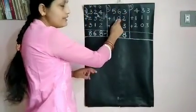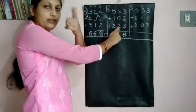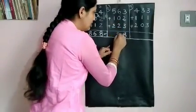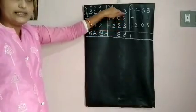6 plus 0 is 6 itself. So 6 plus 2, 8. Next you have, add the hundreds.